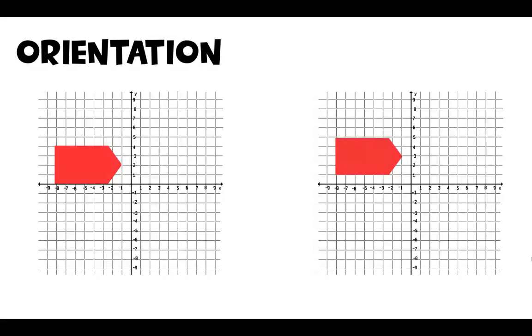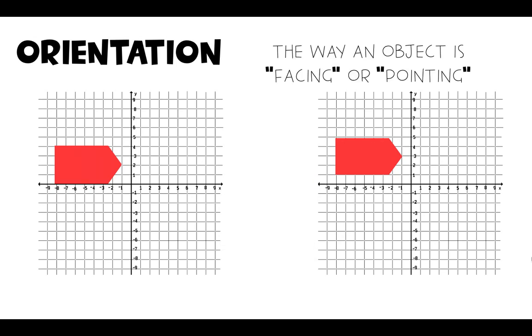When we're talking about orientation, orientation means the way an object is facing or pointing. So we have this trapezoid on the left-hand side. I like to think about the way it's facing as this little pointy part right here at the front. That's the front it's facing, right? If we translate it to the bottom, is our pointy part still facing the front? Yes. So it did not change the way it was facing or the way it was pointing. So the orientation stayed the same.